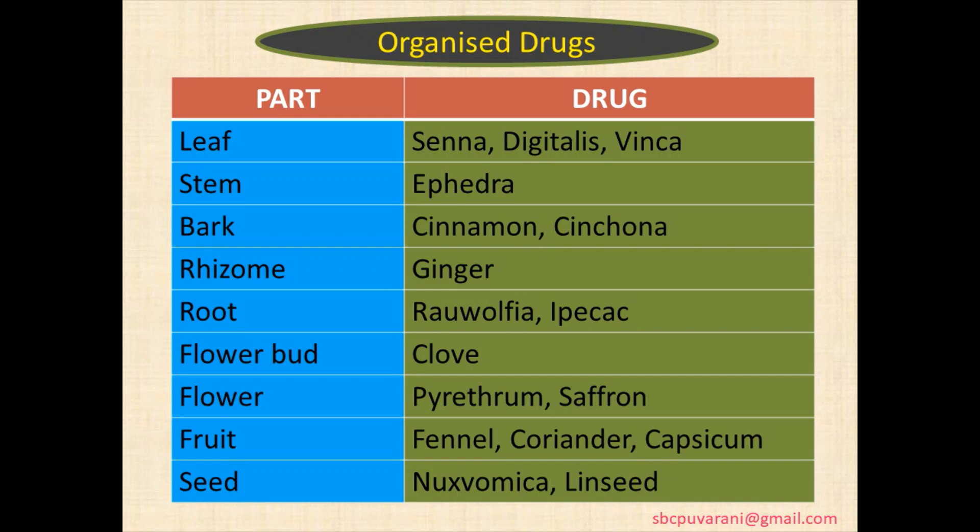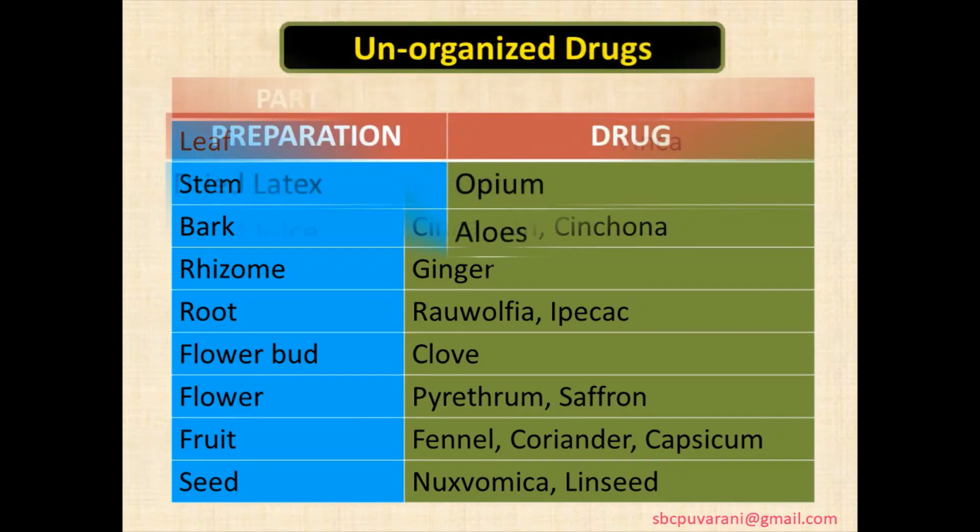Rhizomes: ginger. Root: Rauwolfia, ipecac. Flower buds: clove. Flower: pyrethrum, saffron. Fruit: umbelliferae family like fennel, coriander, dill, and capsicum. Seeds: nux vomica and linseed.